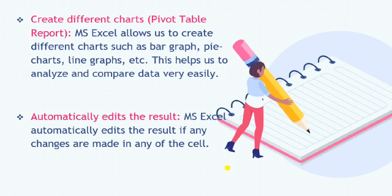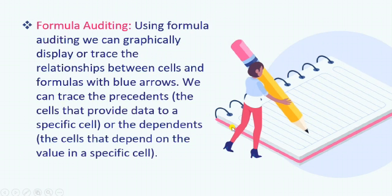Automatically Edit the Result: you can edit and change the result very easily. If you want to make any changes in a cell, you can do it very easily. Formula Auditing: we can graphically display or trace the relationship between cells and formulas with blue arrows. We can trace the precedents — cells that provide data to a specific cell — or the dependents — cells that depend on the value in a specific cell. This is called formula auditing.